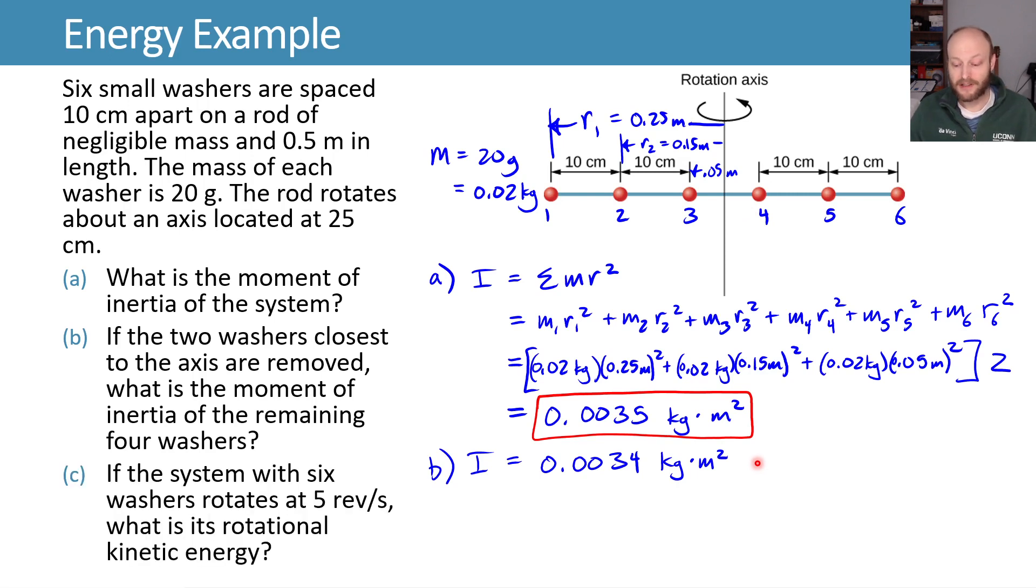What about if our system with six washers, so we're going back to our original moment of inertia, rotates at five revolutions per second? What is our rotational kinetic energy? We have a formula for this. K is equal to one-half I omega squared. We've already found I, so we can plug that in.